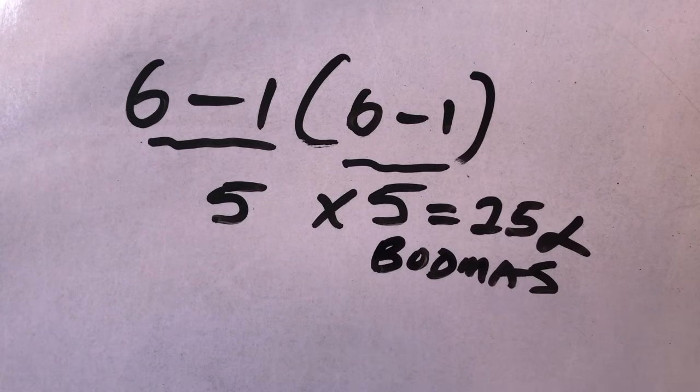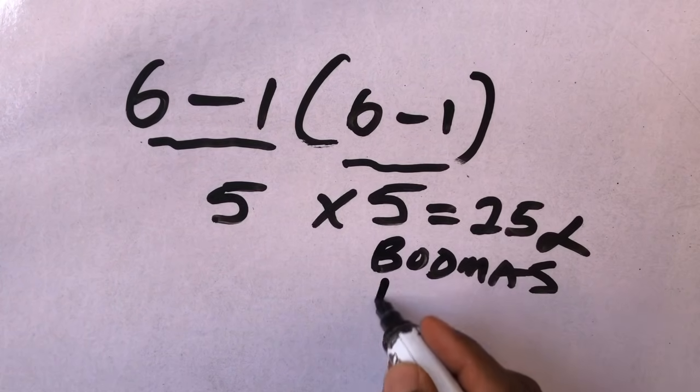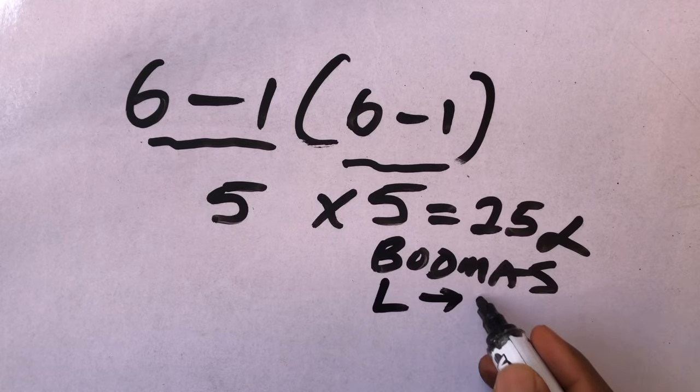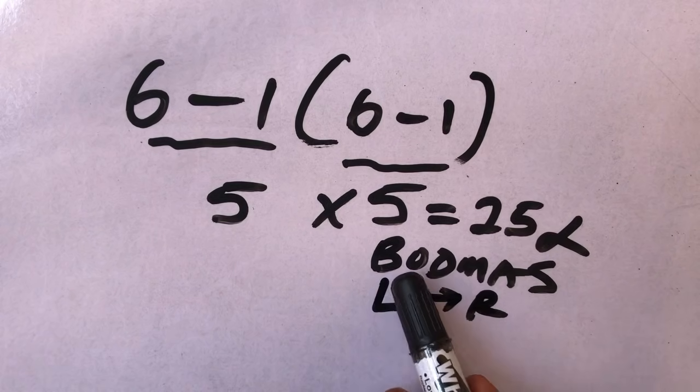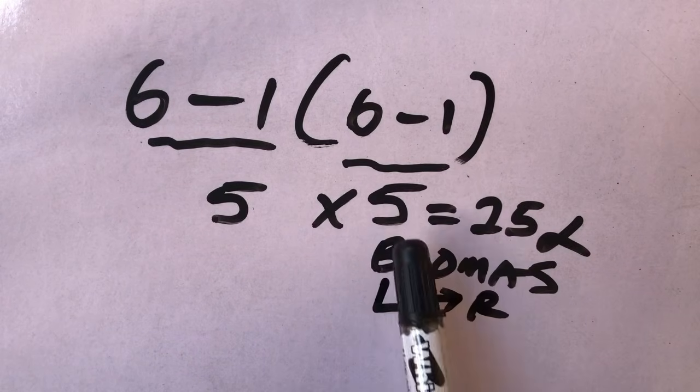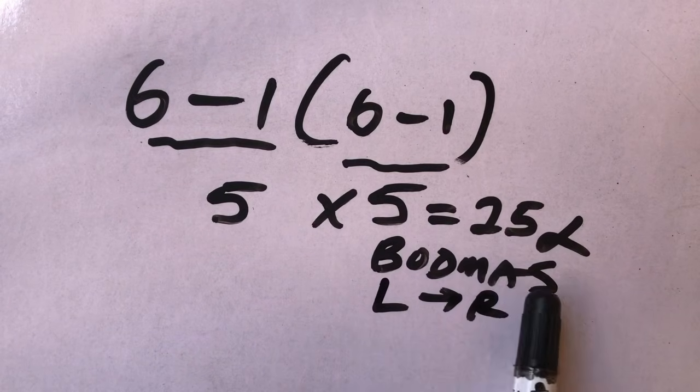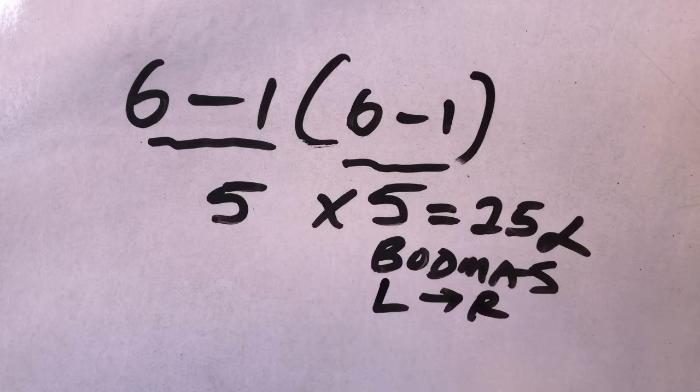So the rules state that we have to solve the equation from left to right. So we are starting with the bracket first. We do the bracket first before the division, before multiplication, addition, and subtraction.